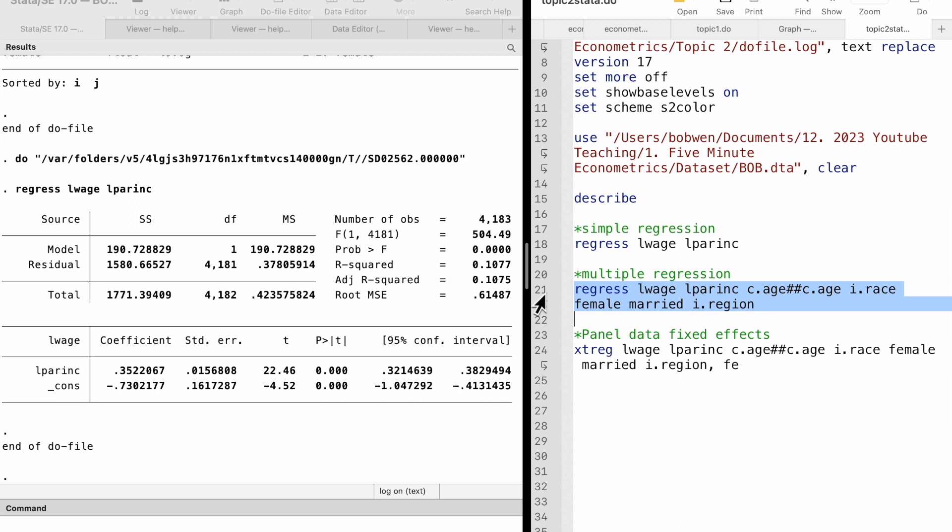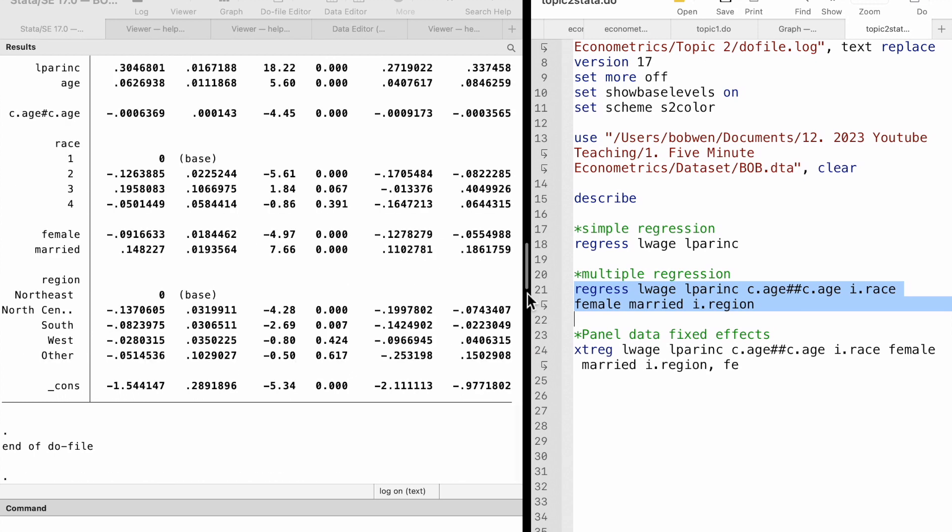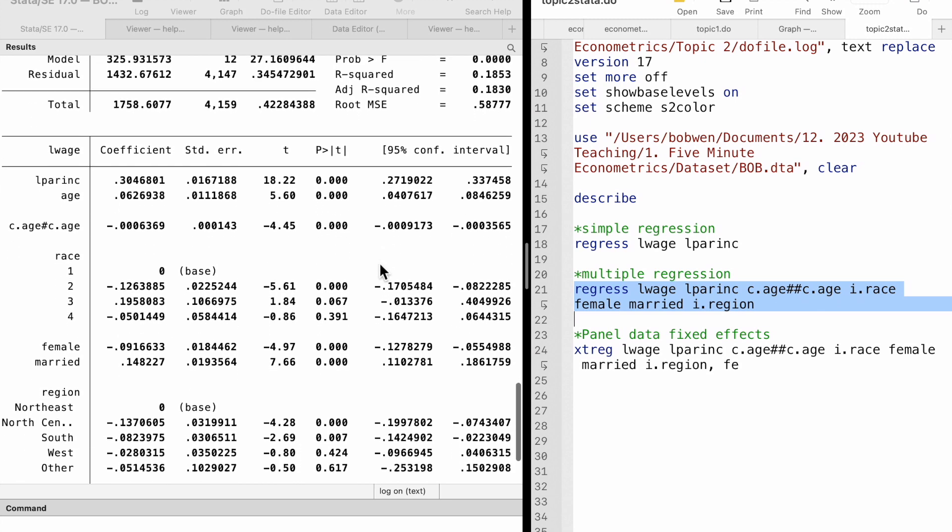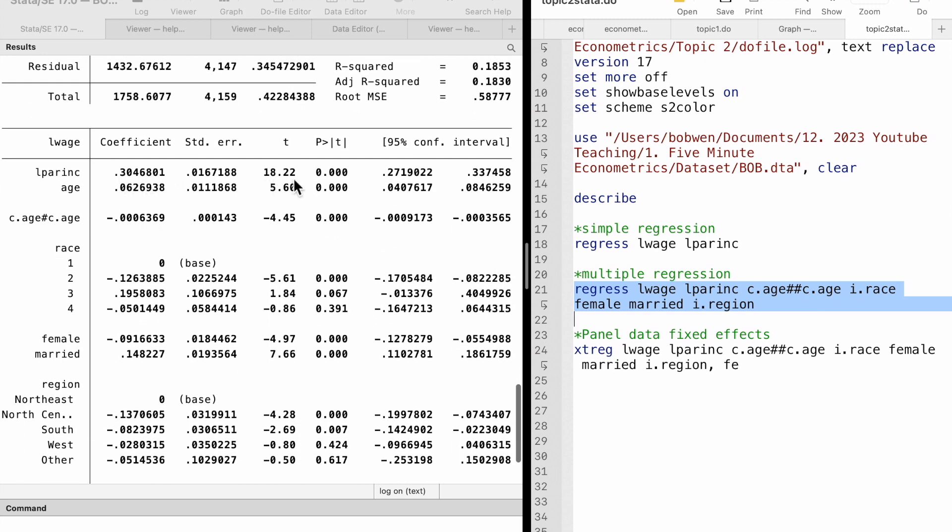We know that many demographic characteristics affect the workers' wages and also relate to parents' income. So we include age, age squared, race, gender, marital status, and region of residence in the multiple regression. The estimate drops to 0.30. It comes closer to the causal effect,